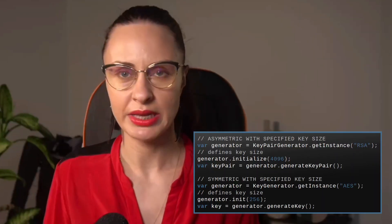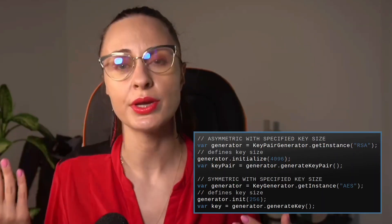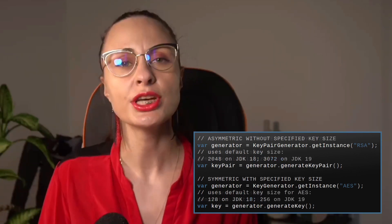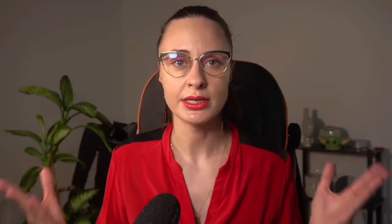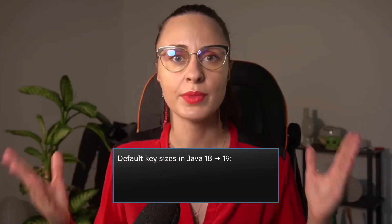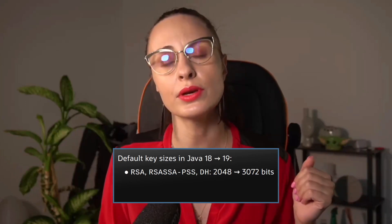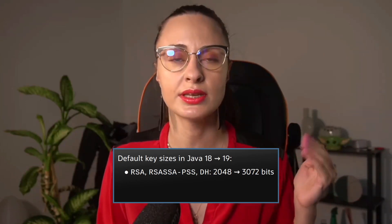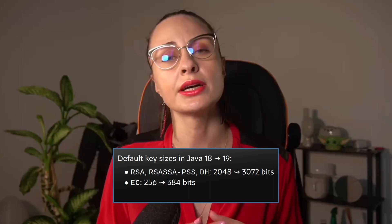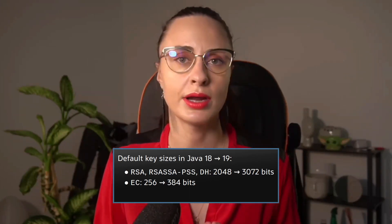If you're working on application features related to encryption or decryption, you are aware that these processes are based on publicly available algorithms, but access to the data is obtained using a secured key. If you do not specify a key size when using a key pair generator or key generator object to generate a key pair or secret key, the JDK provider will use a provider-specific default value. To meet security standards, starting with JDK 19, default key sizes have been increased. For RSA, RSASSA-PSS, and DH algorithms, the default size has been increased from 2048 bits to 3072 bits. For the EC algorithm, the default size has been increased from 256 bits to 384 bits.